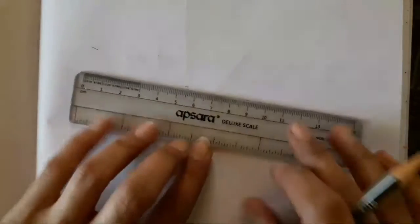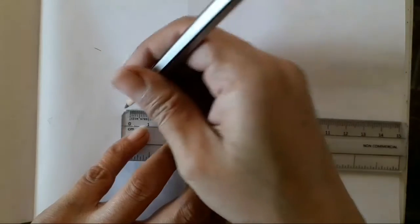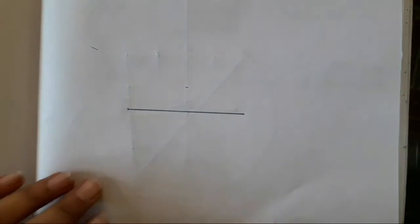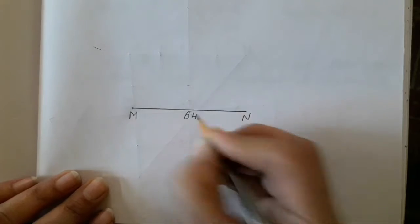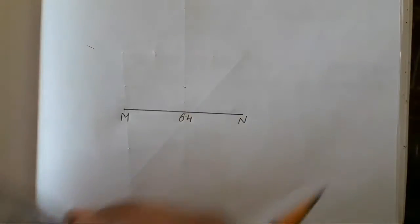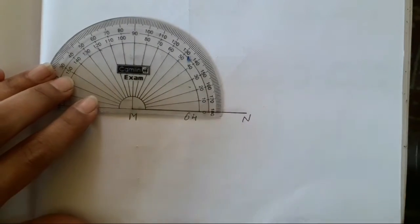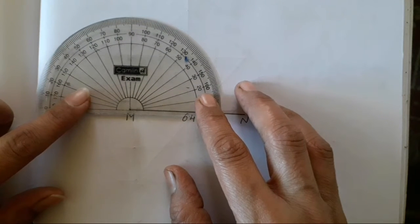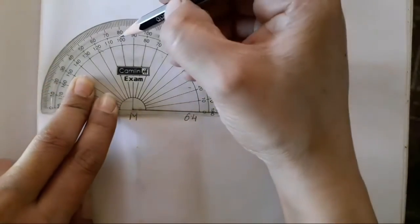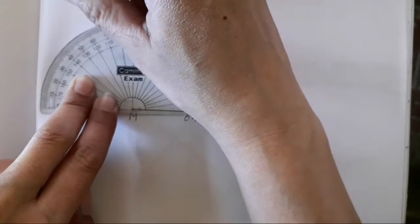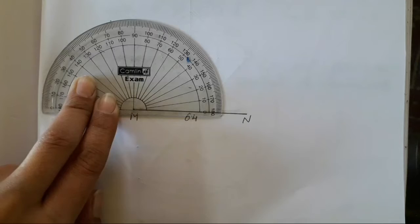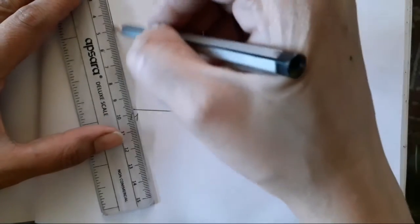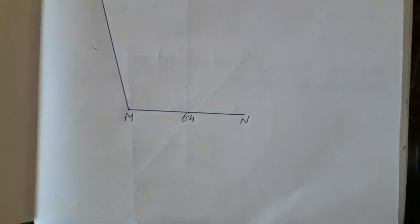Starting with the triangle first, we have to construct a base which is 6.4 cm. MN is the base of the triangle at 6.4 cm. Then, using point M, we have to construct an angle of 105 degrees. My 100 is over here; 105 comes over here. We will draw a line segment. So we have got our 105 degree angle.